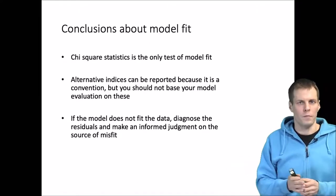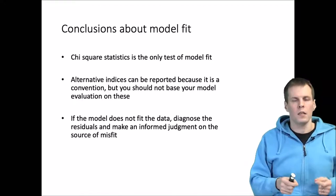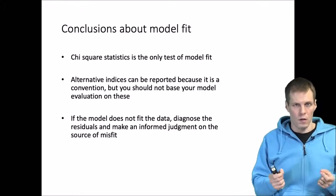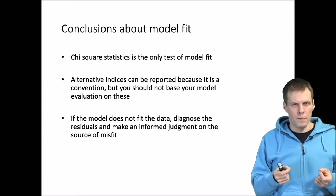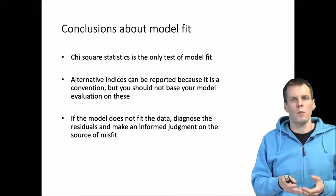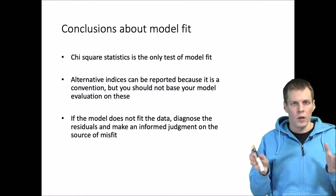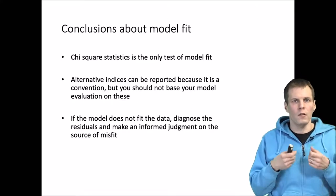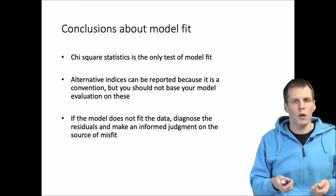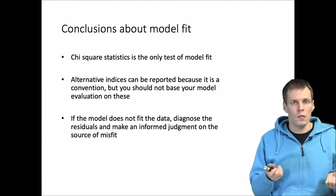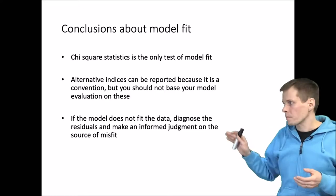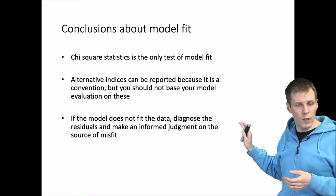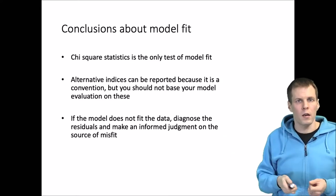Conclusions about model fit: the chi-square is the only test of model fit. If you want to test if the model is correct for the data, the chi-square does that job. The other indices quantify the degree of average misspecification, but average covariance misfit hides individual covariances that can indicate serious problems. These indices are not helpful for doing diagnostics. Nevertheless, they can be reported as convention since reviewers often ask for CFI, RMSEA, and SRMR. Finally, if the model does not fit the data, it is important to do diagnostics of residuals or modification indices to understand the source of misfit.